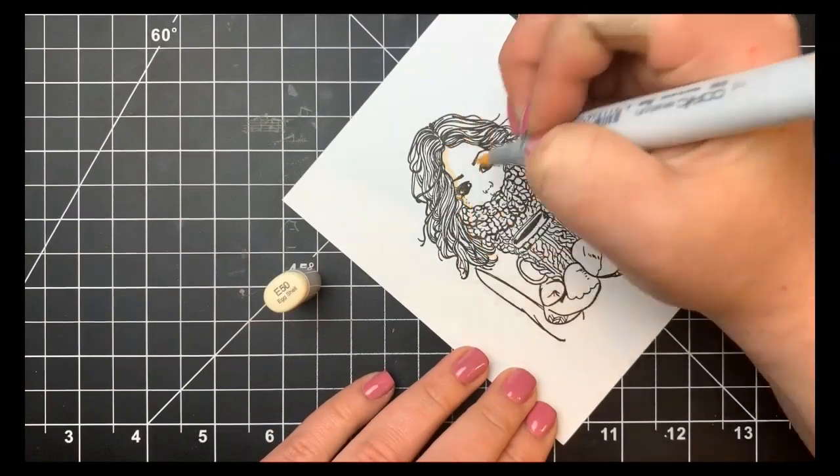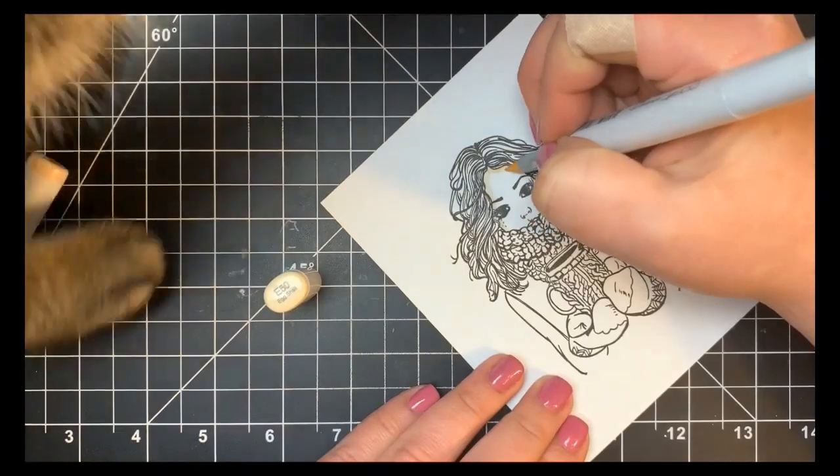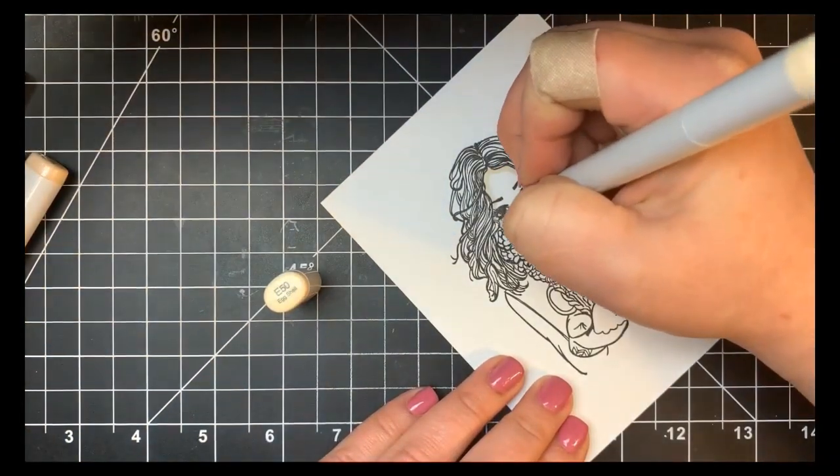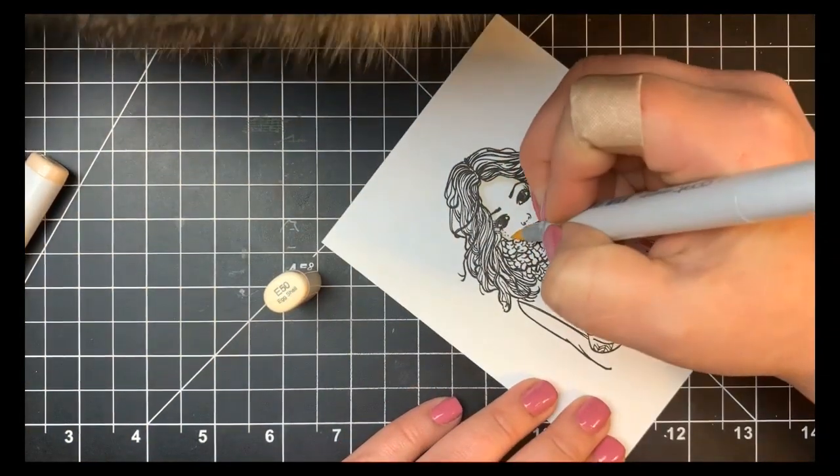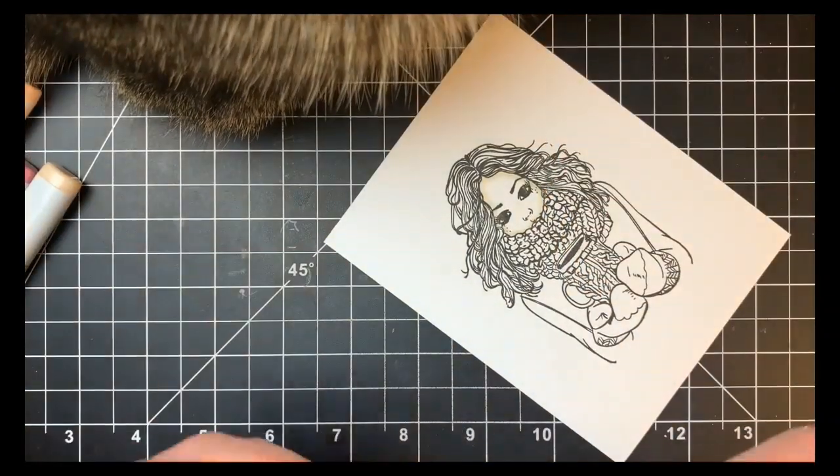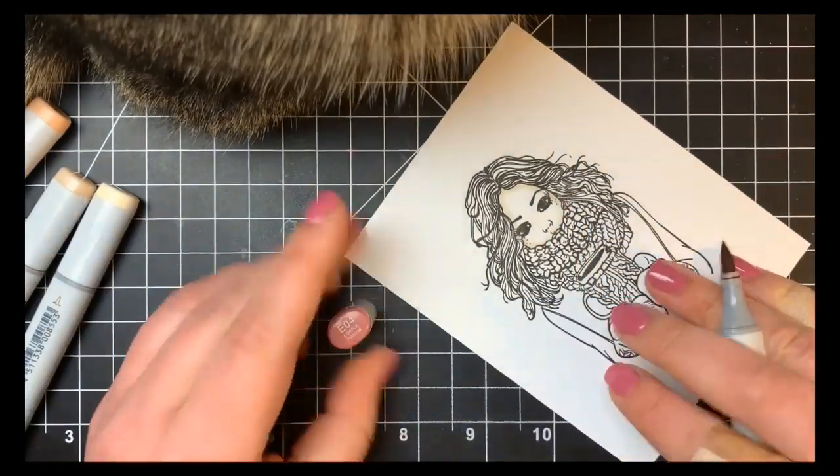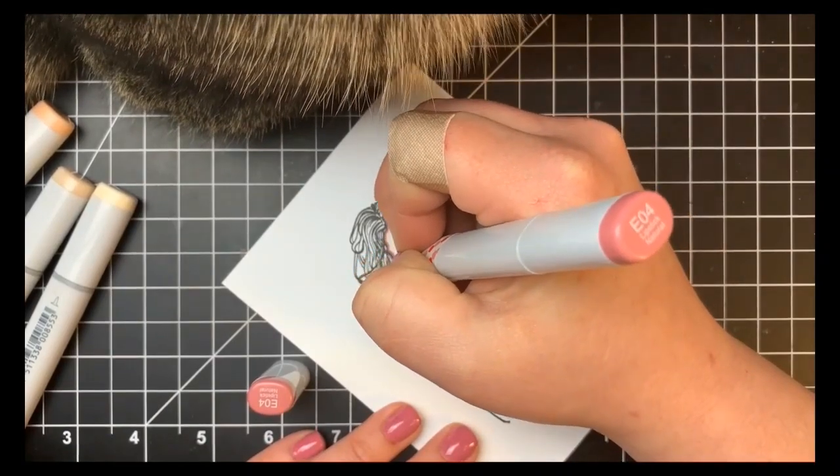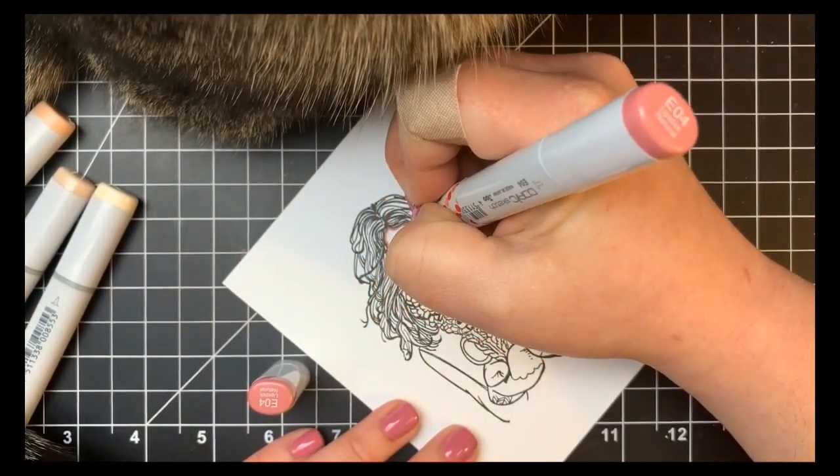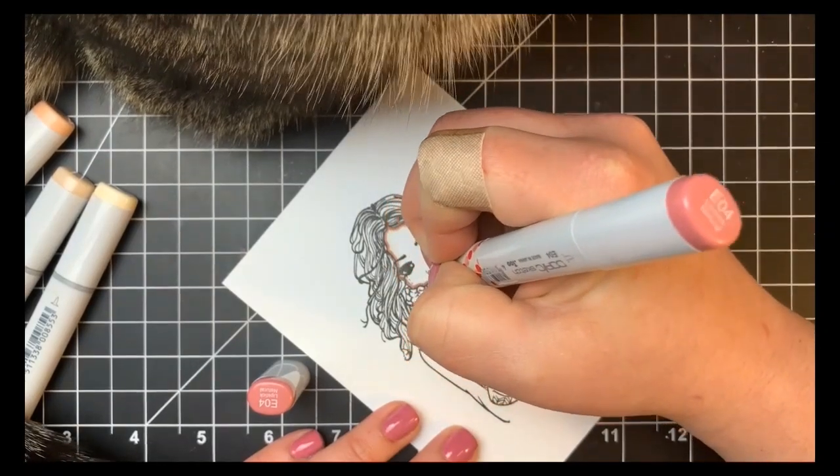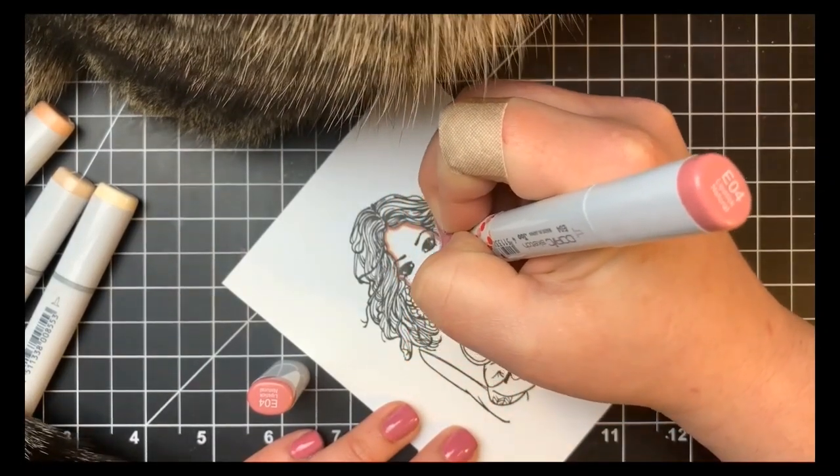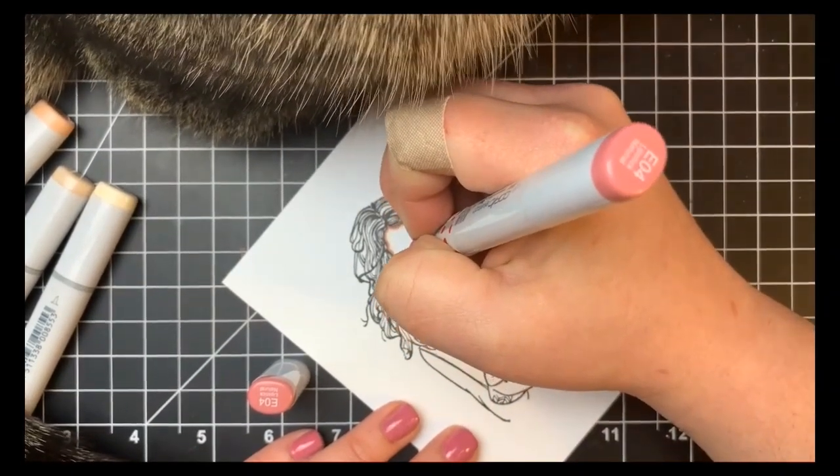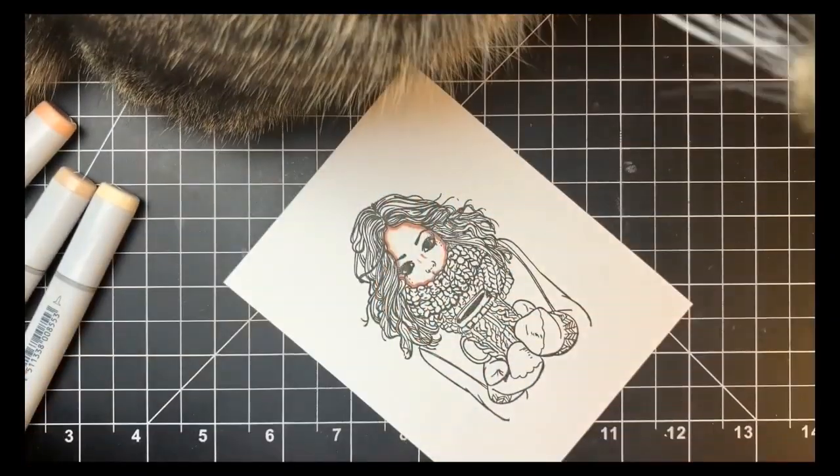Starting with her hair, I'm using my lightest color to start and mapping out my darkest areas. For her face, it'll be underneath where her hair is hanging over, and her scarf is laying on top of her chin, so that would create a shadow as well.